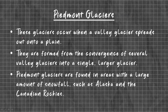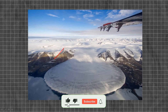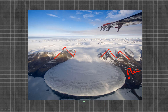Piedmont Glaciers. These glaciers occur when valley glaciers spread out onto a plain. They are formed from the convergence of several valley glaciers into a single larger glacier. Piedmont glaciers are found in areas with large amounts of snowfall, such as Alaska and the Canadian Rockies. As you can see, the snow moves downwards from the mountains onto the plain, forming Piedmont glaciers.